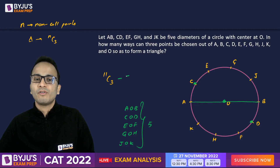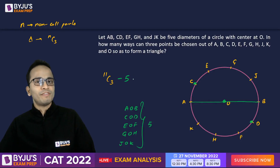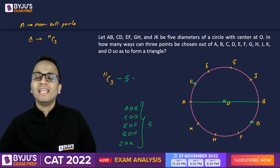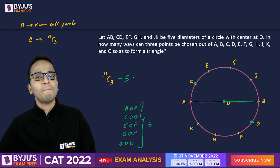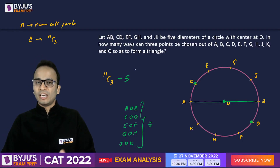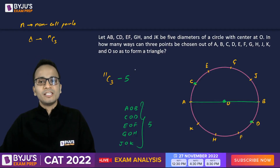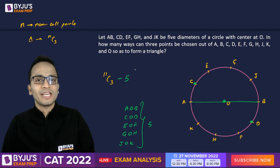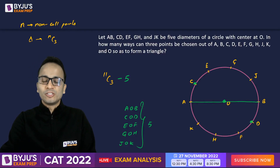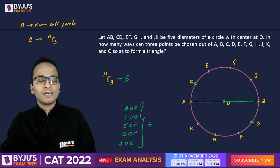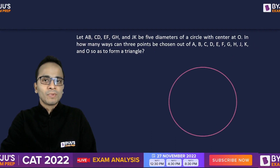So we subtract these five cases from 11C3. The final answer will be 11C3 minus 5. You can do the calculations to get the final numerical answer.